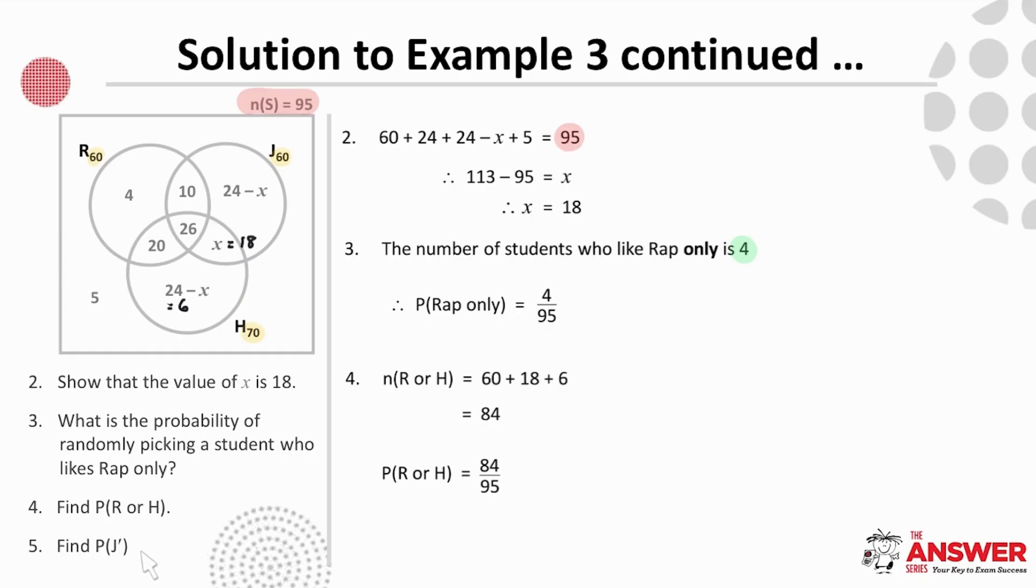And then finally, we have to find the probability of Not Jazz. This can be done in two ways, either by finding the number that do like Jazz, which is 60, finding the probability of this, and then finding the complement by going 1 minus this probability to find the probability of Not Jazz, or by finding the number that don't do Jazz, which is everything outside the circle, and finding the probability of that.